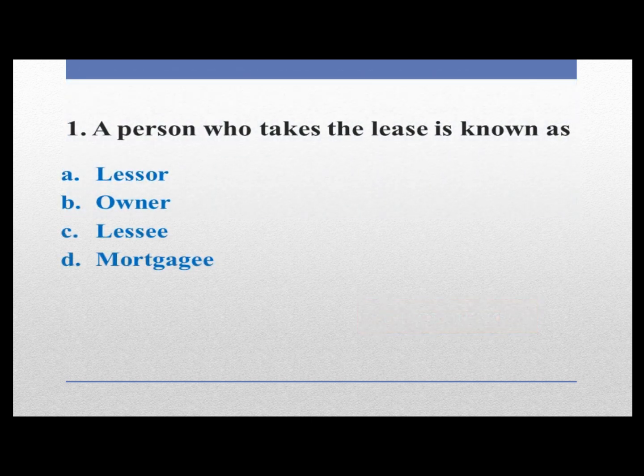A person who takes the lease is known as: option A lesser, option B owner, option C lessee, option D mortgagee. The person who takes the lease is known as lessee. So option C is correct.